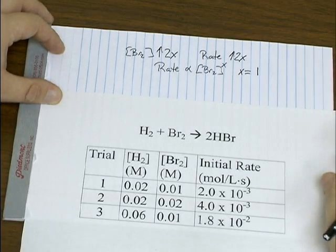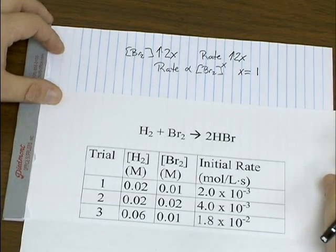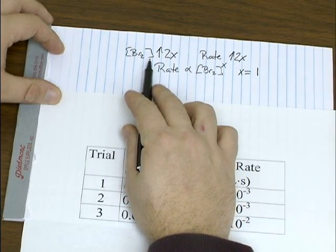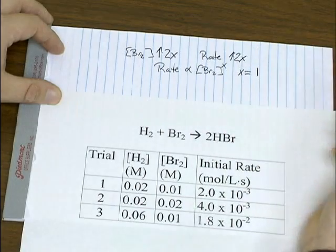Now in other words, it's first order with respect to bromine. Because whatever you do to the concentration of bromine, the rate increases by the same factor.